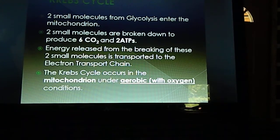During those two cycles, six carbon dioxides are released, and two ATPs. So from the Krebs cycle, you only get two ATPs. From glycolysis we got zero net, and then in the Krebs cycle we get two.